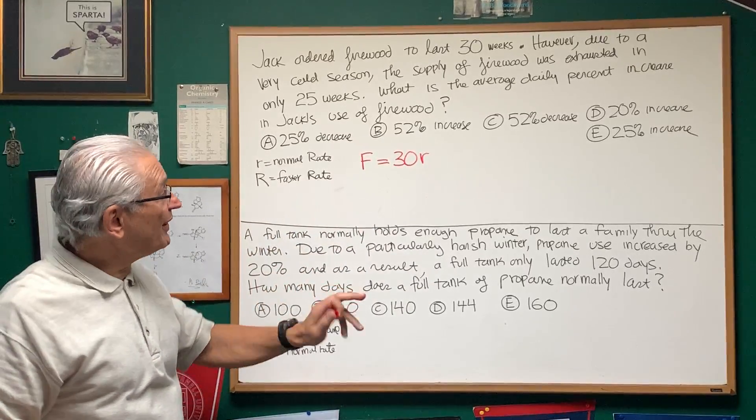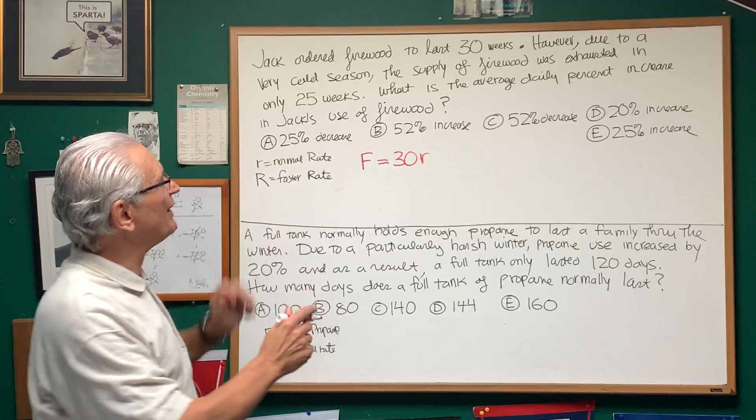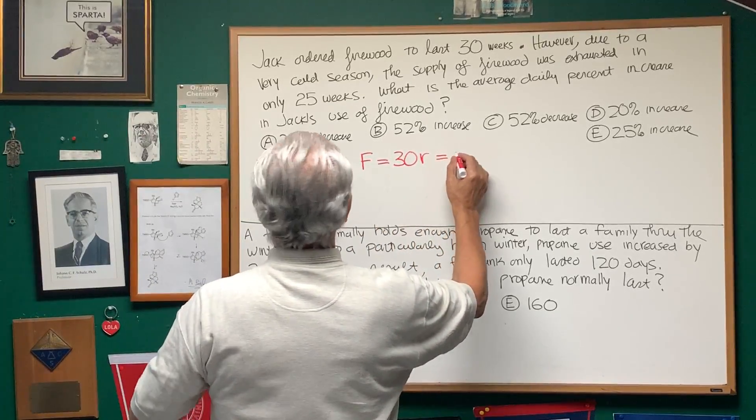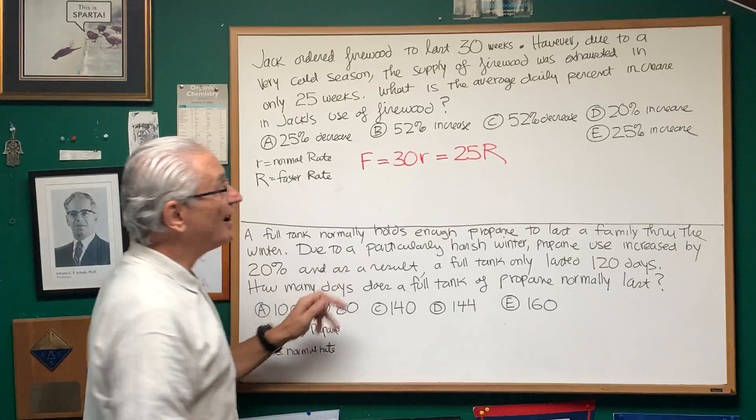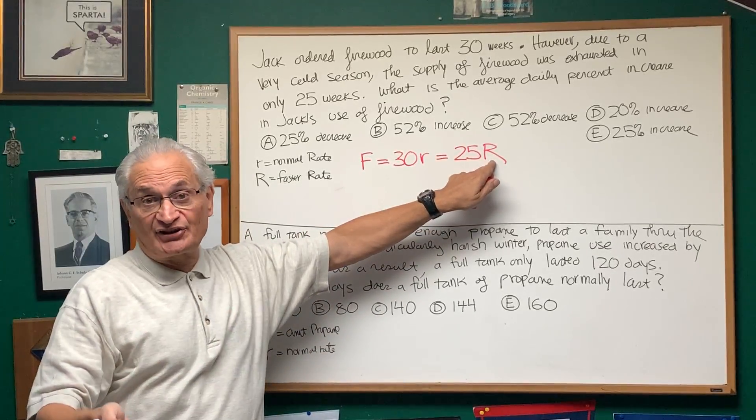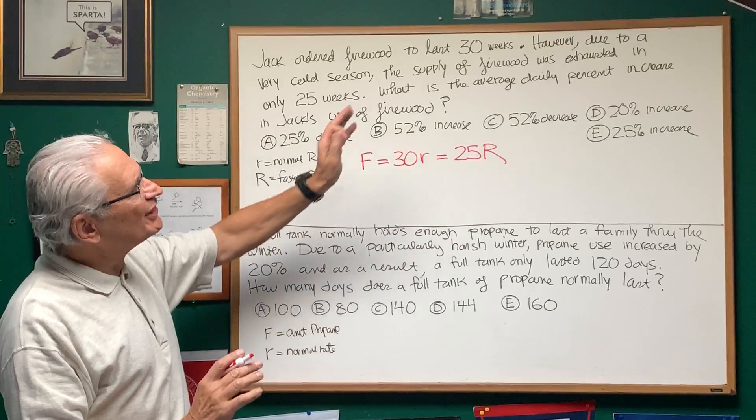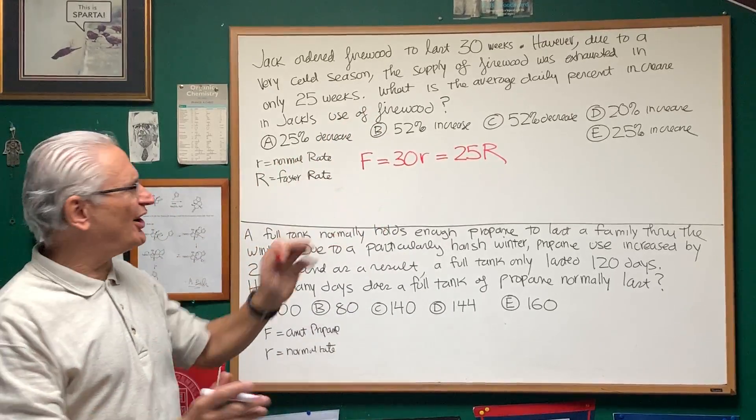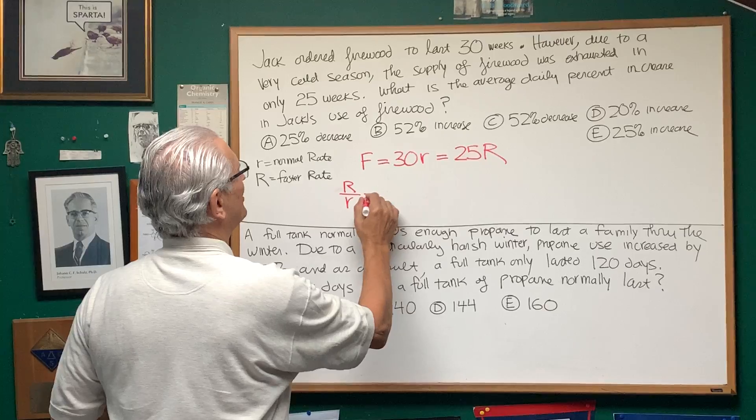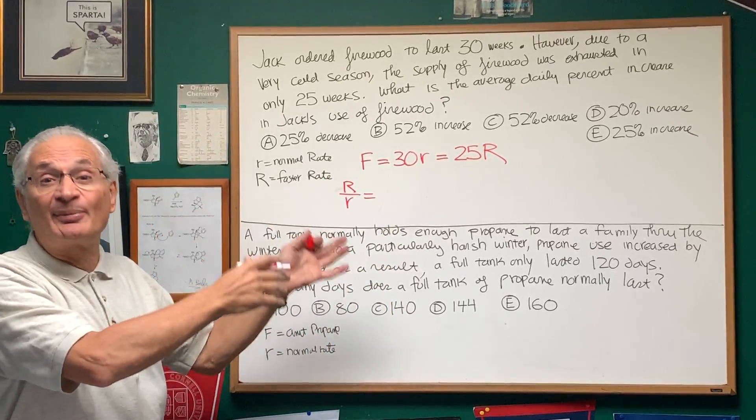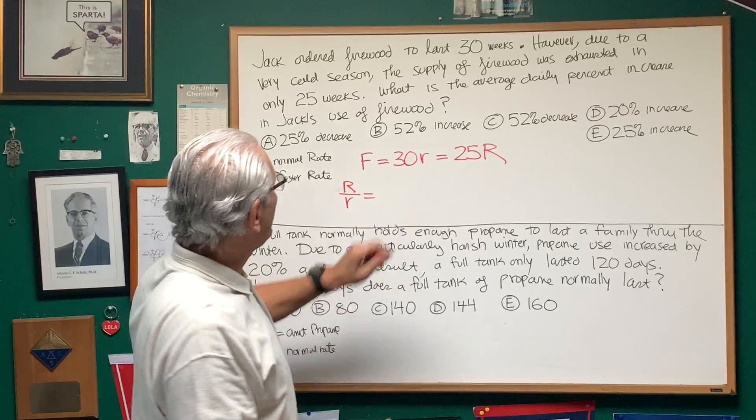30 weeks and r consumption per week. That's going to be set equal to 25 times capital R, because R is the faster rate of consumption that's used up in 25 weeks. So what we're looking for is the percent increase in firewood. We want to evaluate R over r first, and from that, determine how much of the percent increase it represents.